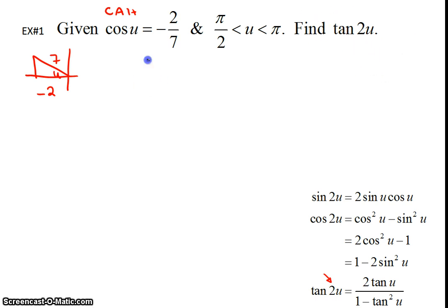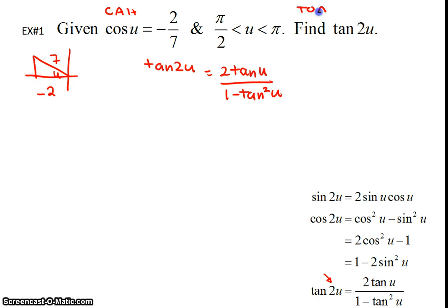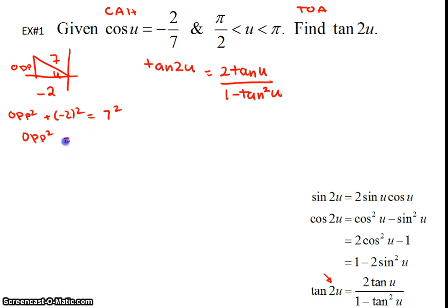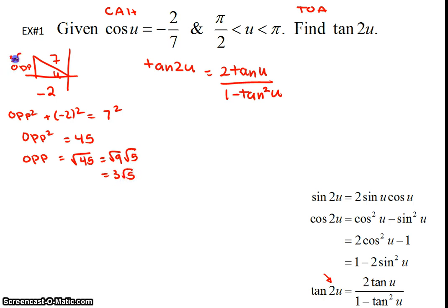We're going to find tangent of 2U using the double angle formula: tangent of 2U is 2 tangent of U over 1 minus tangent squared of U. So we need to find tangent of U. Tangent using SOHCAHTOA is TOA — opposite over adjacent. We need to find the opposite side using the Pythagorean theorem: opposite squared plus negative 2 squared equals 7 squared, so opposite squared is 49 minus 4, which is 45. Taking the square root of 45 gives 3 root 5, so the opposite side is 3 square root of 5.